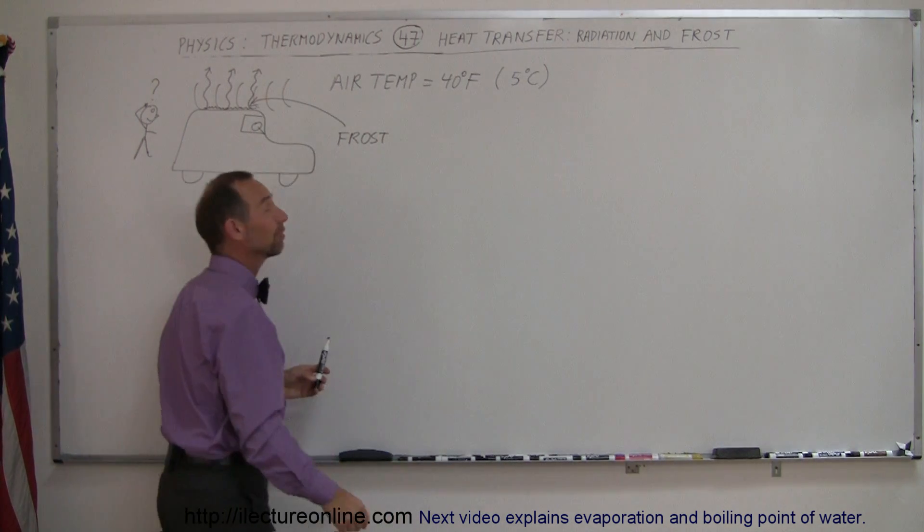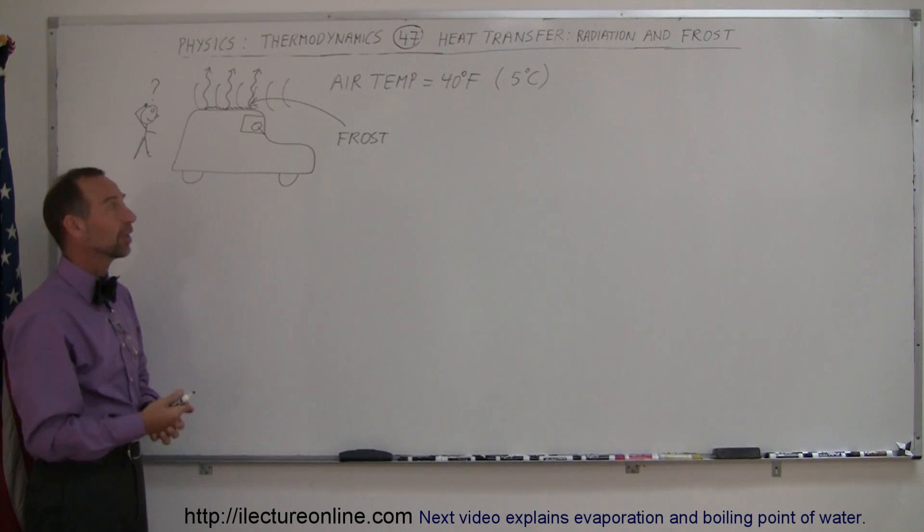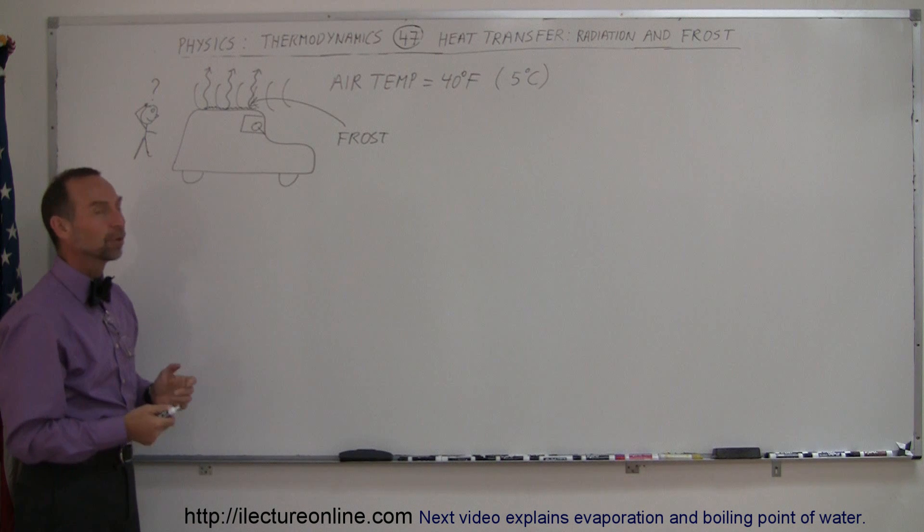even though the air temperature may not be below freezing. Let's say the air temperature is at 40 degrees Fahrenheit - cool, but not freezing - about 5 degrees centigrade. Why would there be frost on top of the car?